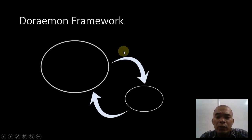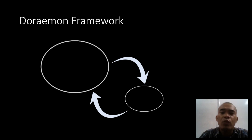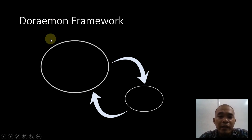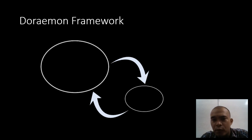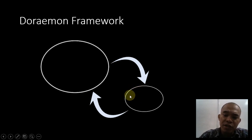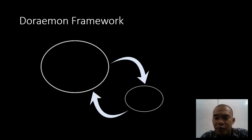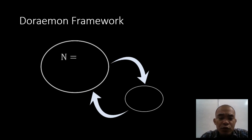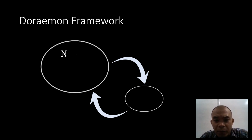Every time we solve a problem in inferential statistics, we're going to convert the problem into this framework. The big circle here represents the population. This arrow represents that from the population, we're taking a sample of a certain sample size. The small circle here represents the sample. The arrow back represents that we're trying to infer or predict the population using the statistic from the sample. N here represents the population size.